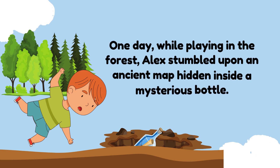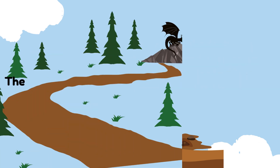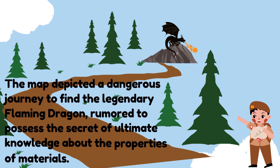One day while playing in the forest, Alex tumbled upon an ancient map hidden inside a mysterious bottle. The map depicted a dangerous journey to find the legendary flaming dragon, rumored to possess the secret of ultimate knowledge about the properties of materials.